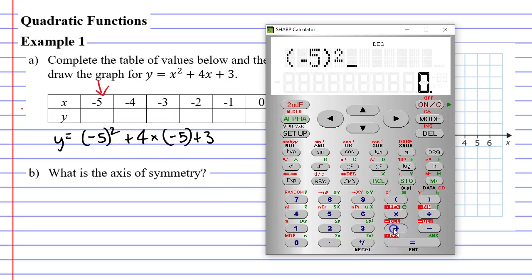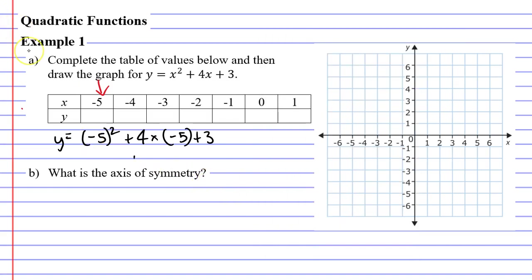Next we add 4 and times this by negative 5. And then finally we're plus 3. Now you'll notice once again it's put the negative number in brackets. When we press equals we get 8 which means that when x is negative 5, y must equal 8.